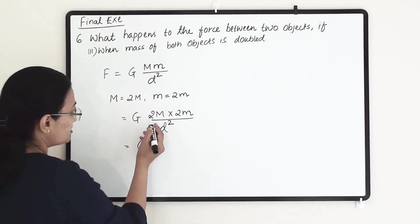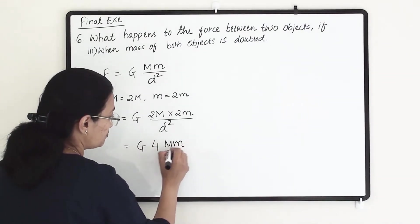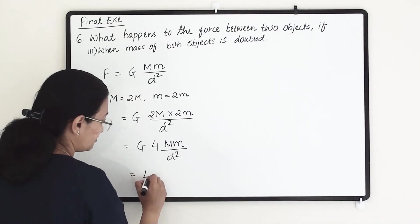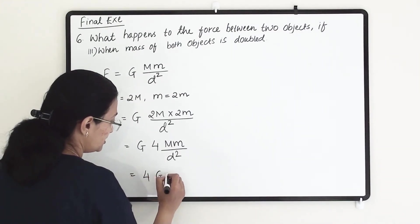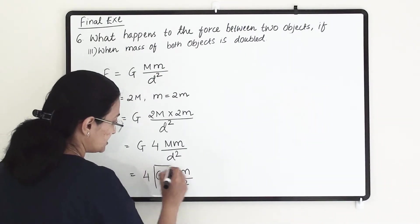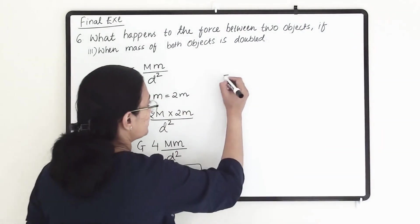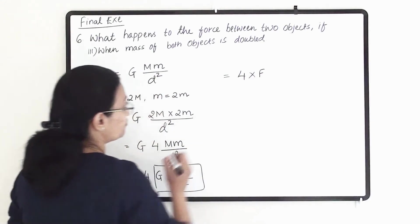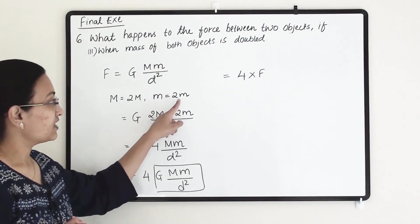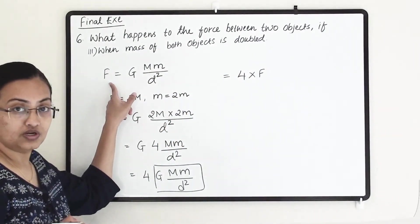Multiplying 2 times 2 gives 4, so we get 4 times G times capital M times small m divided by d square. Taking the 4 out gives us 4 times the original gravitational force formula. So we can write 4 times F. When the mass of both objects is doubled, our force will be 4 times higher than the original.